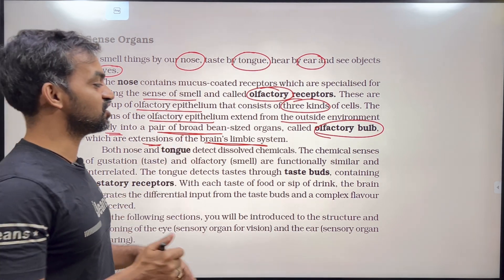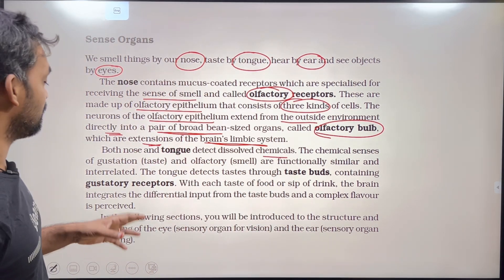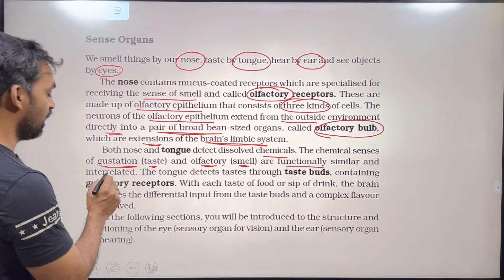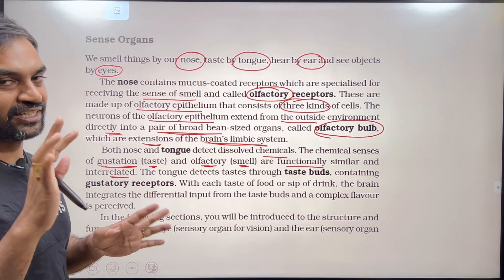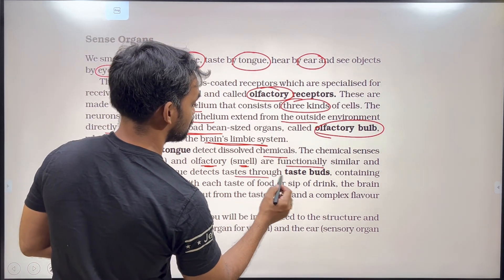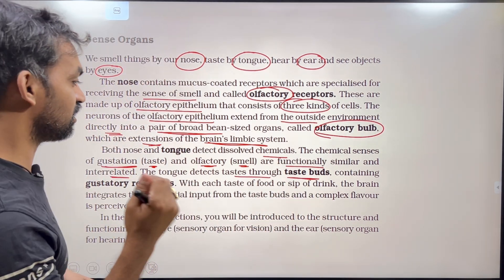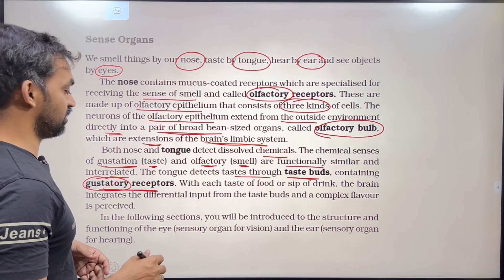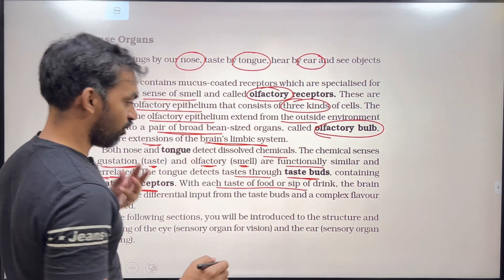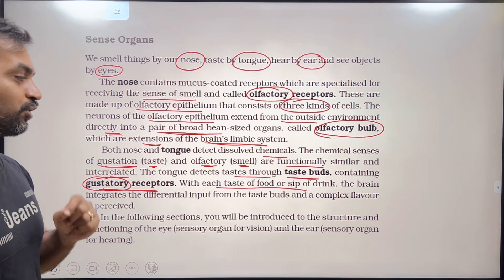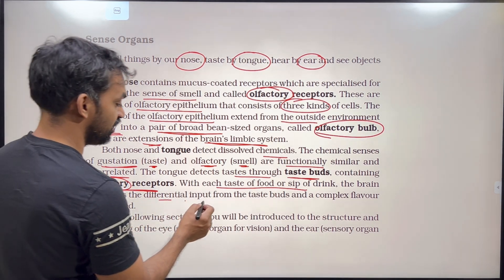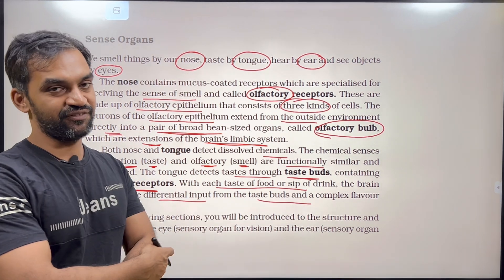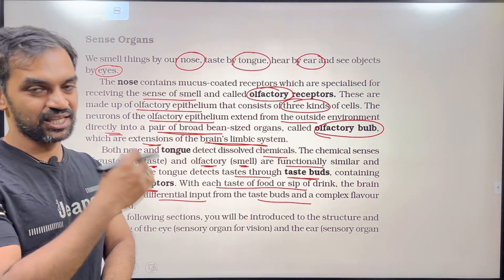The tongue detects dissolved chemicals, and the chemical senses of gustation (taste) and olfaction (smell) are functionally similar and interrelated. The tongue detects taste through taste buds. With each taste of food or sip of drink, the brain integrates the differential input from taste buds and a complex flavor is perceived.